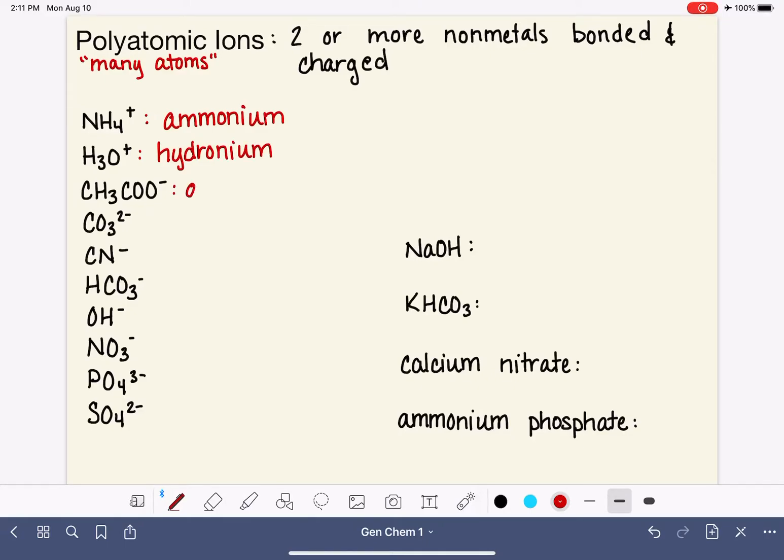CH3COO- acetate. And I want to also add here that the formula for CH3COO- can be written in a couple of different ways. So you could also see it written as CH3CO2- and sometimes C2H3O2-. If you count the atoms out, you'll see it's the same number of atoms no matter how it's written.